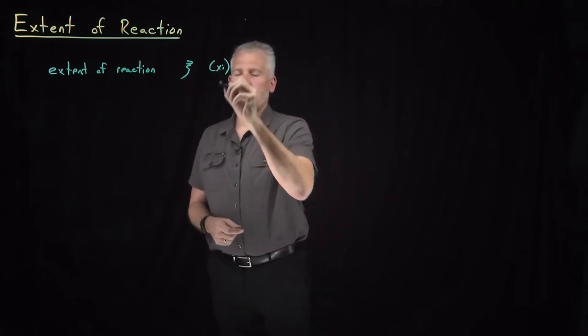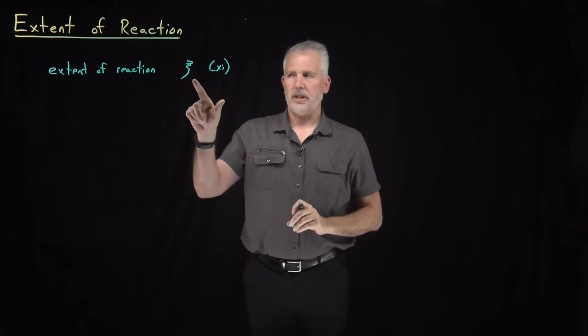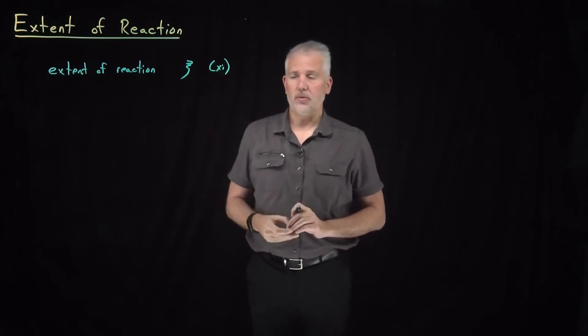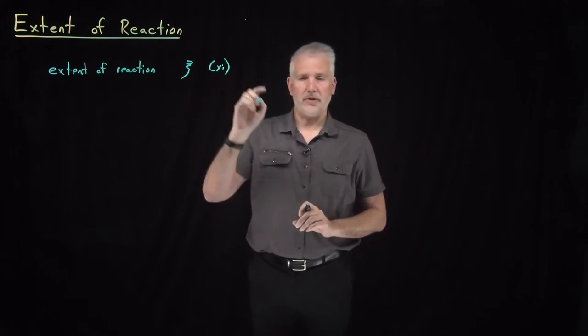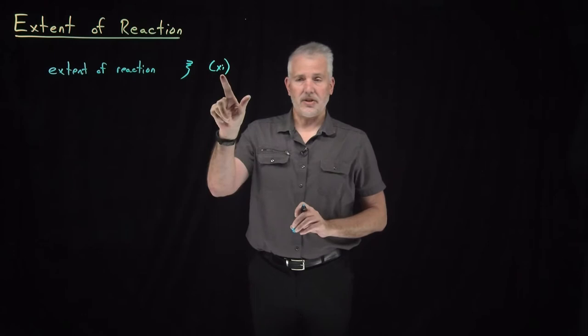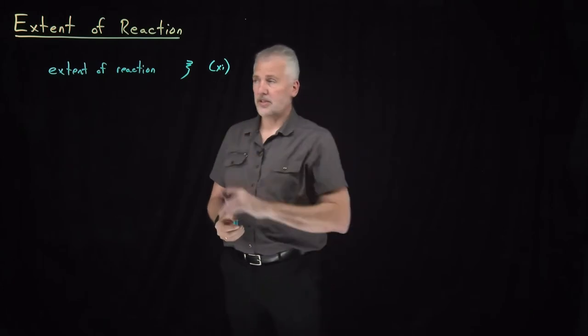Conventionally, we use the variable xi to represent the extent of reaction. Because my handwriting is relatively bad, I'll point out that's the Greek letter xi — this is sort of the most unfortunate of the Greek letters. Everybody draws it a little bit differently and pronounces it differently. Many people just call this Greek letter 'squiggle,' so if you hear me say squiggle, that's the one I'm talking about.